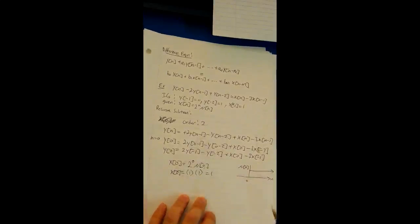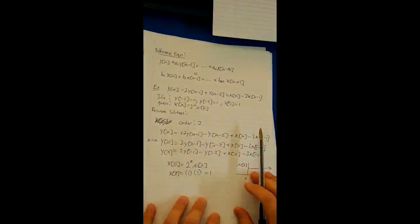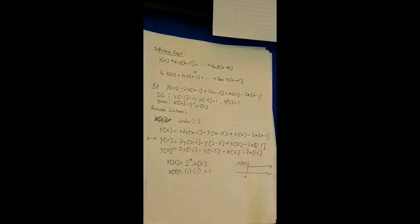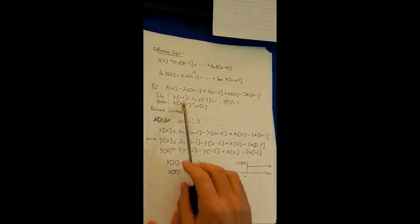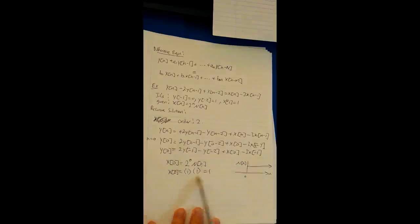So now we have x(0) = 1. What we're going to do is we're going to plug in all the initial conditions now as well as the condition that we found for x(0).